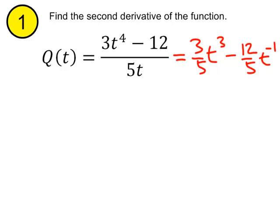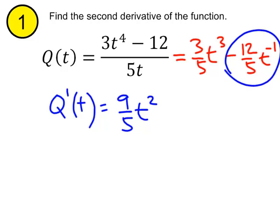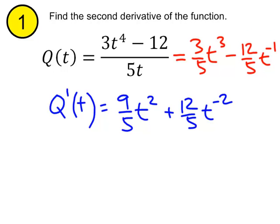Now when I derive it, when I do my first derivative, q prime of t, the derivative of this first piece is going to be 9 fifths t squared. And then when I derive the second half, that will give me minus negative, so plus 12 fifths t to the negative 2.